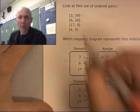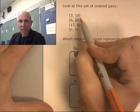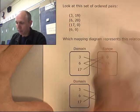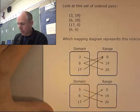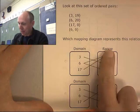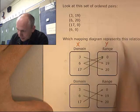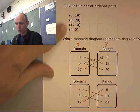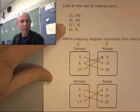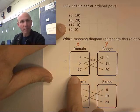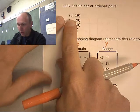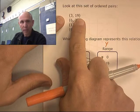So, here's a set of ordered pairs. I have a 3 going to a 19. And these guys down here, they're called mapping diagrams. It's the domain and range. This is just the X's and the Y's. And we're looking at this set of points, this set of ordered pairs, to figure out which mapping diagram makes sense.